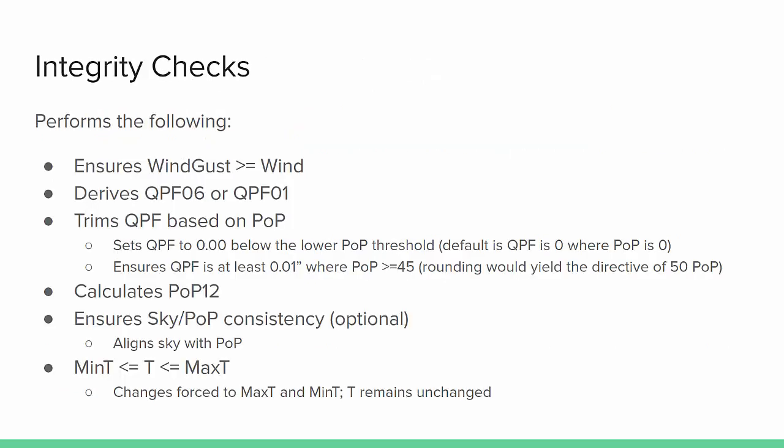Let's look at the process that this step goes through. First, it ensures that the wind gust is greater than or equal to the wind. It derives your QPF 06 or QPF 01 based on local configuration.